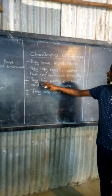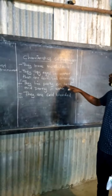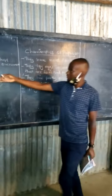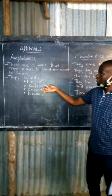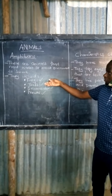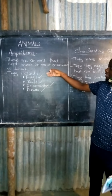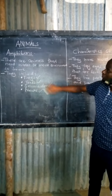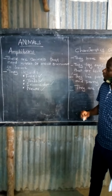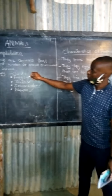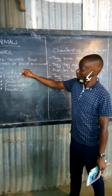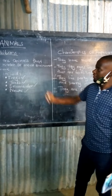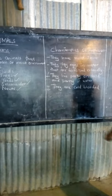The next point is that they live partly on land and partly in water. Some of these animals live in water and some live on land. For example, toads live on land and frogs live in water. Salamander and newt live on land.